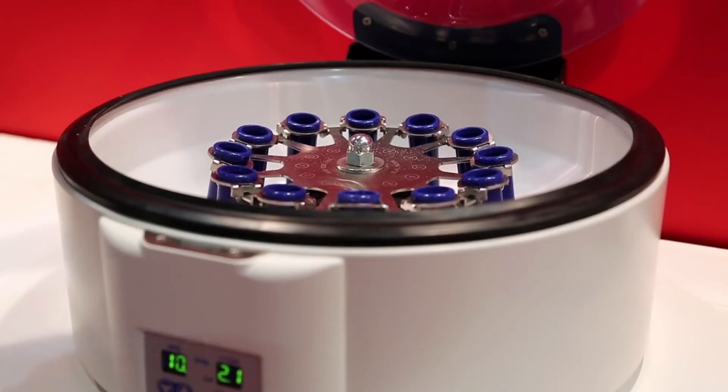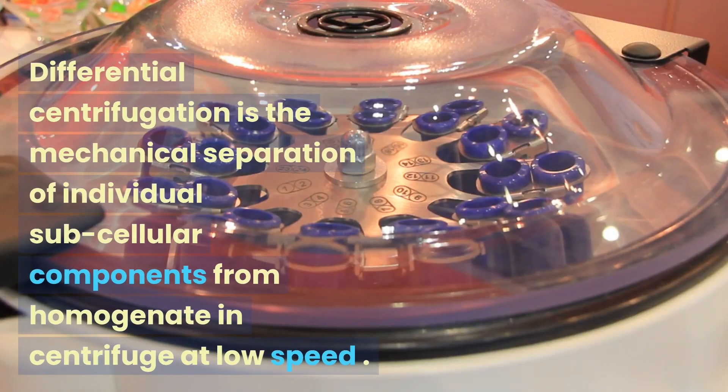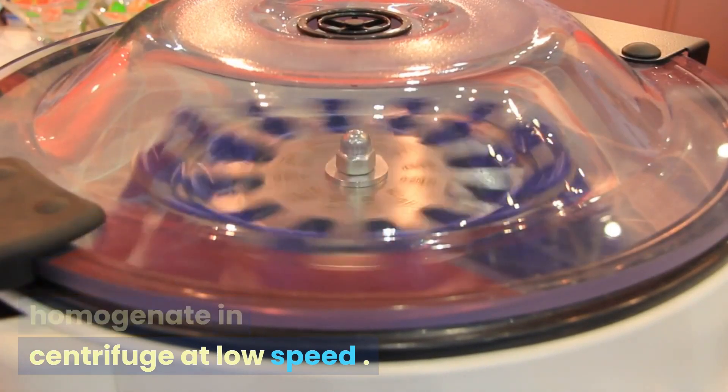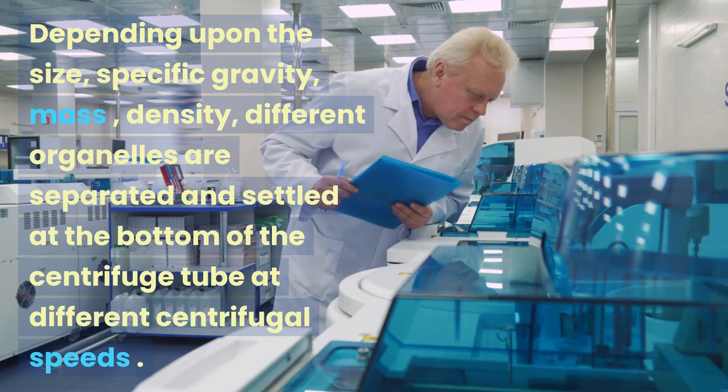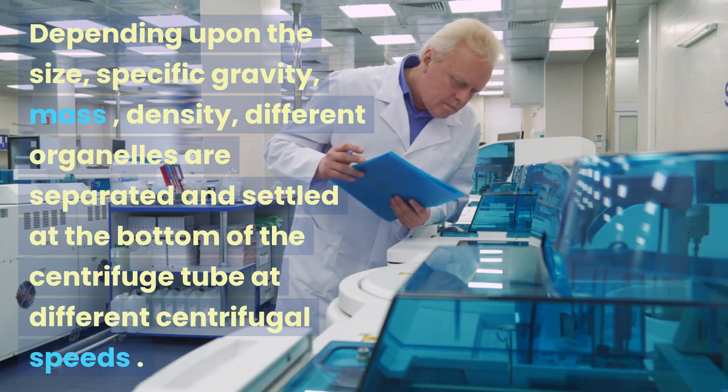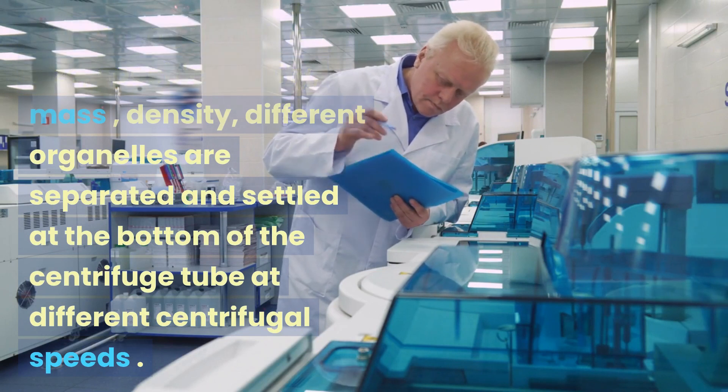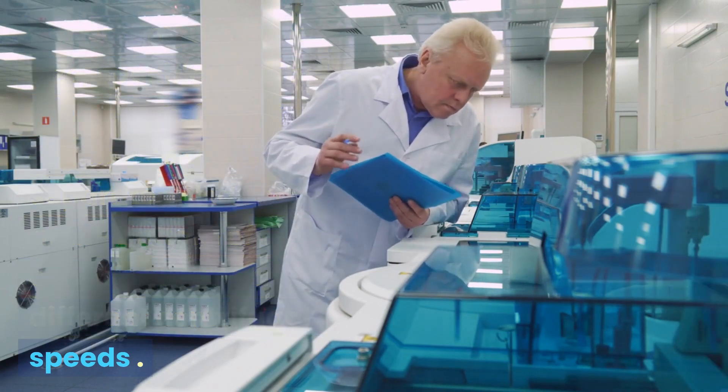Answer is C. Differential centrifugation is the mechanical separation of individual subcellular components from homogenate in centrifuge at low speed. Depending upon the size, specific gravity, mass, density, different organelles are separated and settled at the bottom of the centrifuge tube at different centrifugal speeds.